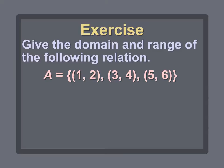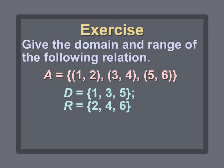Before we talk about functions, let's review what we have been learning. You need to be writing this down and working through these problems with me. The first question: give the domain and range of relation A, which equals the ordered pairs (1,2), (3,4), (5,6). The domain is a set — set D equals the X values: 1, 3, and 5. The range is the Y values: 2, 4, and 6.